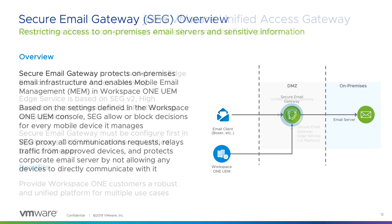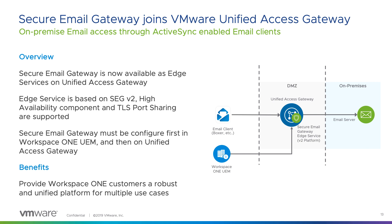Secure Email Gateway has been around for a long time, deploying on stand-alone Windows-based servers, and we have thousands of customers using it around the world. Secure Email Gateway now joins Unified Access Gateway 3.6 as an edge service. It's based on the SEG v2 platform using the same binary, fully supported by Unified Access Gateway, where you can take advantage of TLS port sharing and the high availability component of UAG.